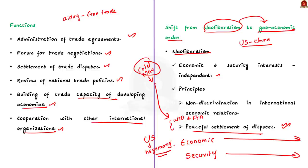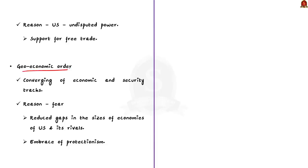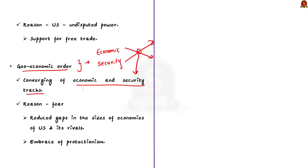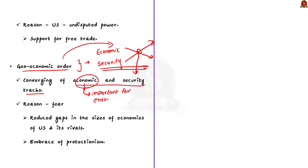But now, countries are moving towards a geoeconomic order — meaning the world order is based on the economic position of countries. If a country is a major economic power, it is seen as a powerful country, because only when able to buy and develop weapons can it protect its territory and sovereignty. In neoliberalism, security never crossed paths with economy — they remained as independent tracks. But in a geoeconomic order, these economic and security tracks started to converge.